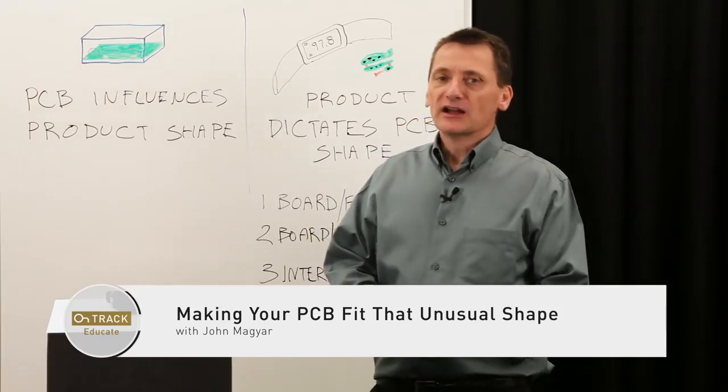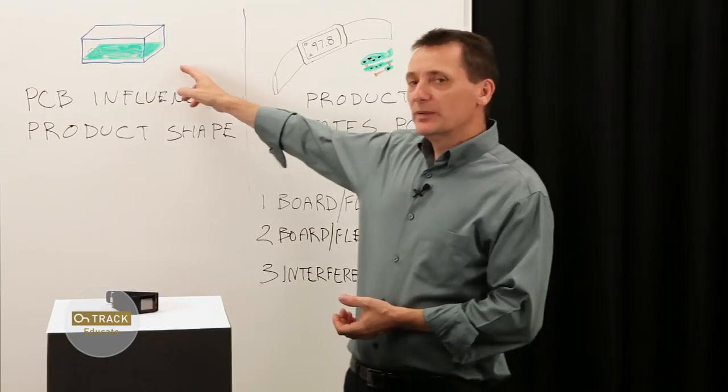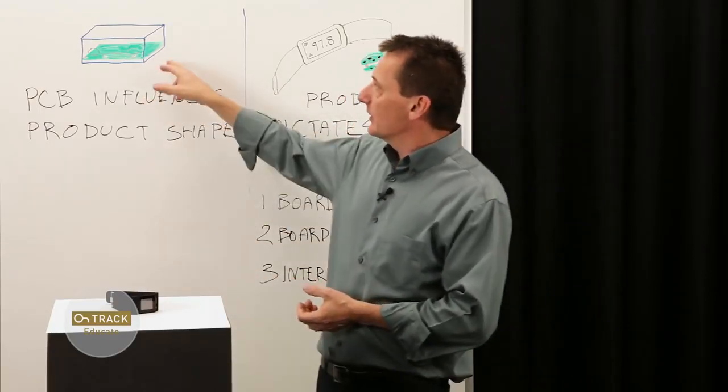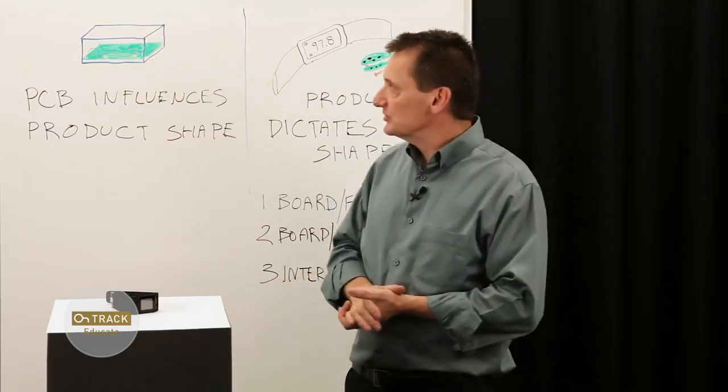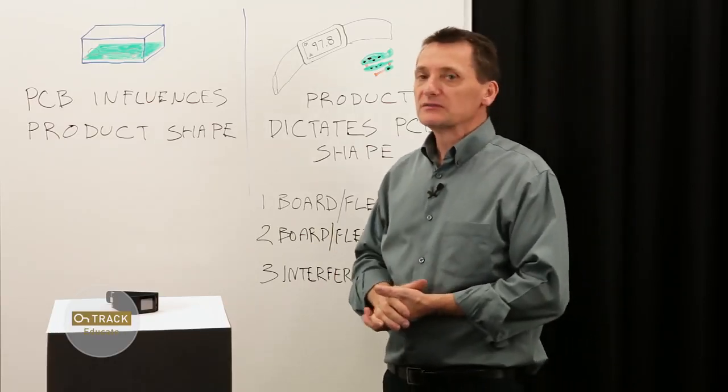If we look back not too long ago, even just a couple decades, typical PCB design shapes were very simple. Rectangular boards that ended up in some type of rectangular box, plastic or sheet metal, and that's what most consumer products consisted of.